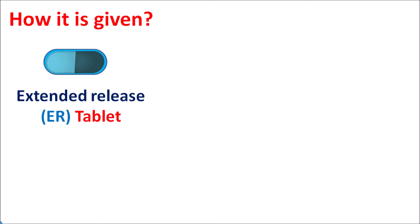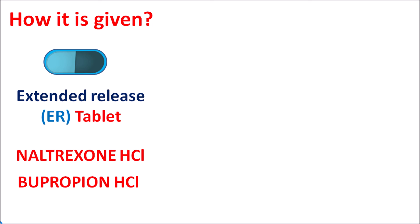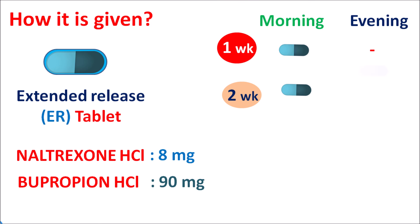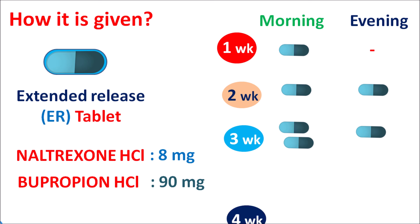This combination is available as an extended release tablet containing naltrexone HCl 8 mg and bupropion HCl 90 mg per tablet. The dose should be slowly escalated: in week one, one tablet in the morning only; week two, one tablet morning and evening; week three, two tablets in the morning and one in the evening; and by week four, two tablets morning and two tablets evening.